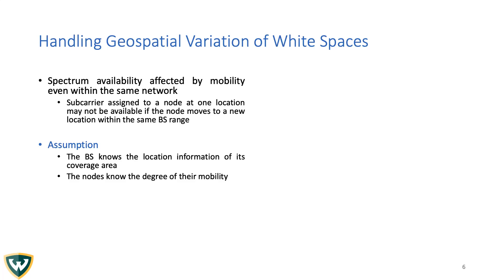Next, we address the geospatial variation of white space within the same SNOW. Due to long range, a node's mobility even within the same network affects spectrum availability. For example, sub-carriers assigned to a node at one location may not be available if the node moves to a new location within the same base station coverage. We make two assumptions: first, the base station knows the location and formation of its coverage area; second, the node knows the degree of their mobility, or the system designer can provide a rough estimation for each mobile node. We handle this problem by proposing a mobility-aware subcarrier assignment policy.